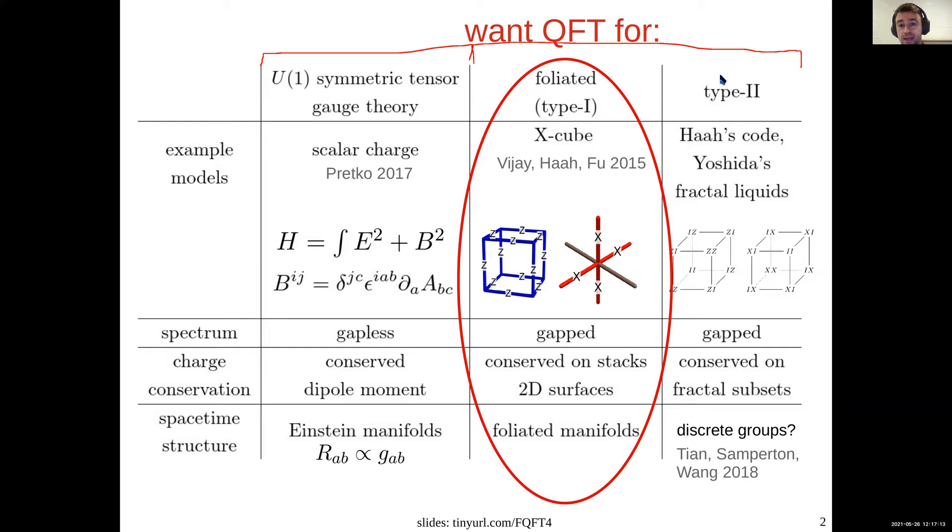What distinguishes them is whether or not you have mobile particles. The type-1 phases have planons and linons particles which can move along 2D planes or 1D lines, or they could also have fully mobile particles or strings. While the type-2 phases only have fractons. None of the particles have any mobility. They're all fractons. And they tend to, you can create these fractons at corners of fractal shaped operators.